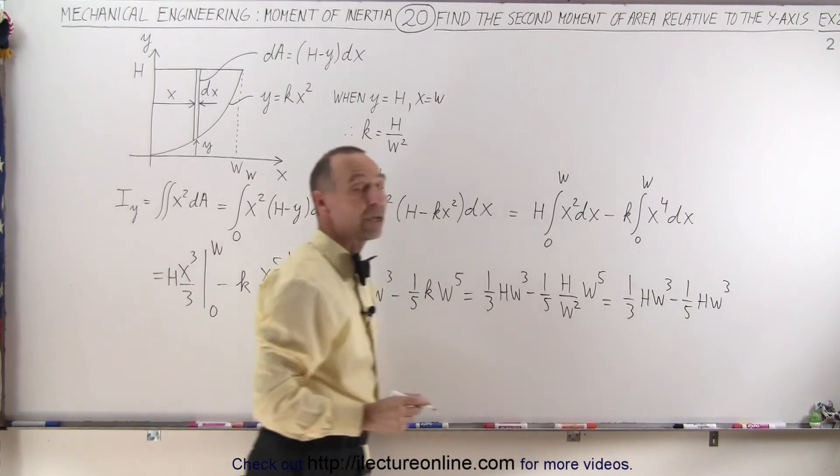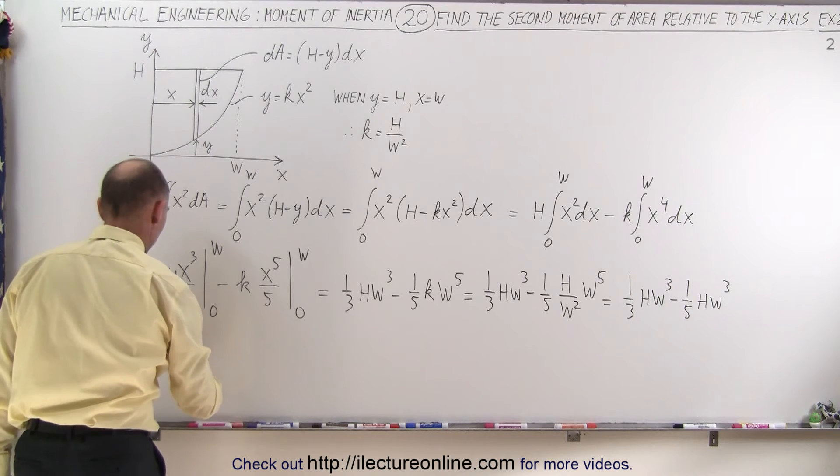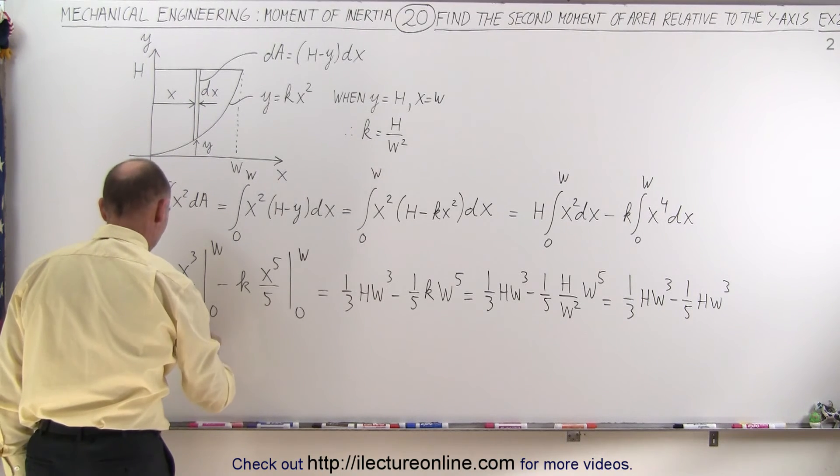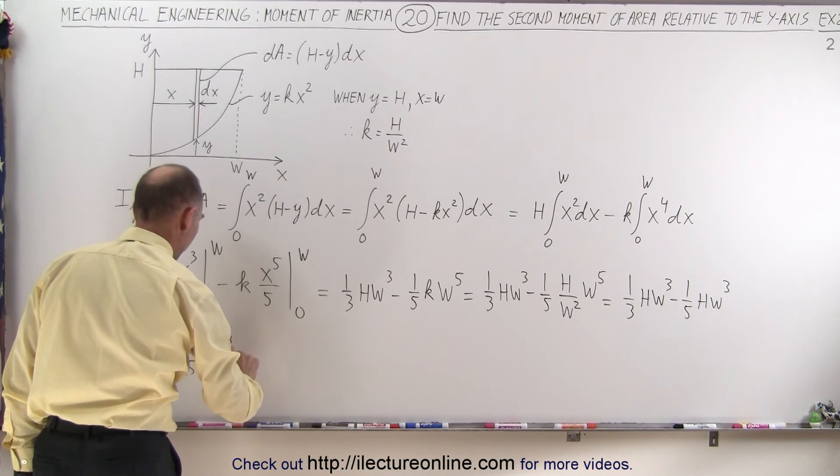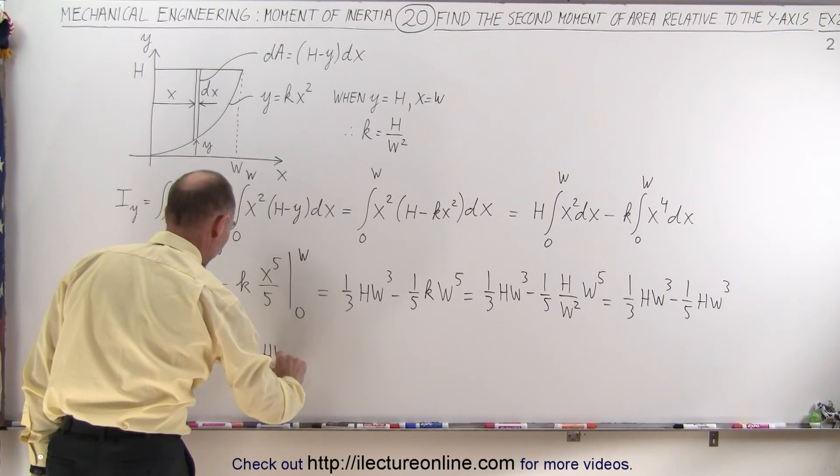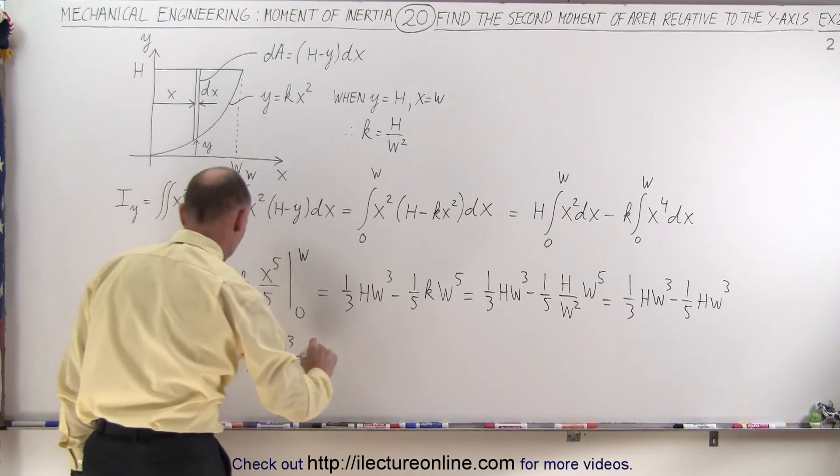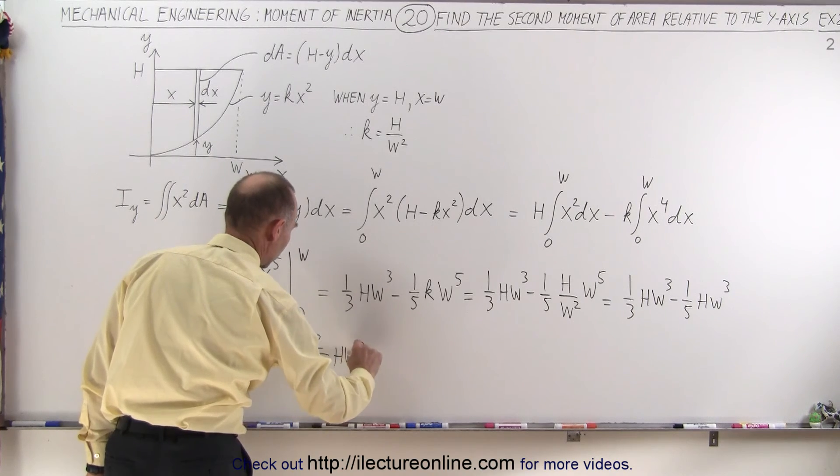Now we can combine that by finding the common denominator, which is 15. So this becomes equal to 5 over 15 h w cubed minus 3 over 15 h w cubed, which is equal to 2 over 15 h w cubed.